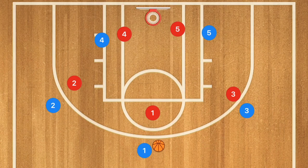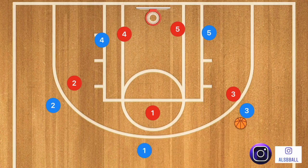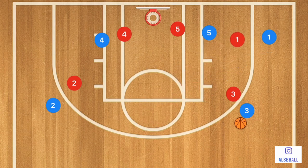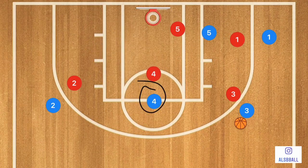This first offense is very simple. We're going to have player one pass over to player three. We're going up against a man-to-man defense, but this is also good against the 2-3 zone and many other types of zones. Player one will go down into that corner, player one's defender will obviously follow, and player four is going to go up towards the point.